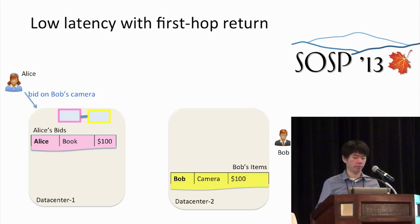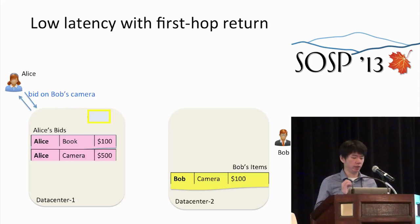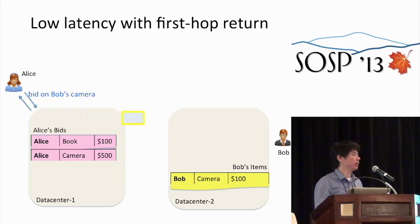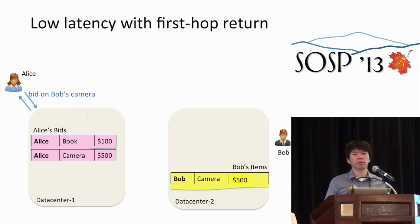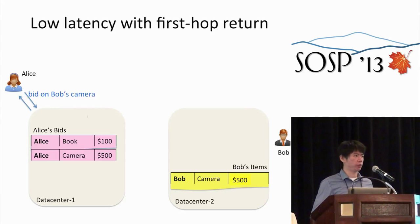Let's look at how Alice puts a bid on Bob's camera using a chain. The request is turned into a chain of two hops — the first hop updating Alice's data, and the second hop updating Bob's data. The first hop only accesses data in the local data center, so it can be carried out immediately and a response sent back to Alice. Alice can then move on to her next operations, while in the background the second hop is shipped to Bob's data center and updates the price on Bob's camera.